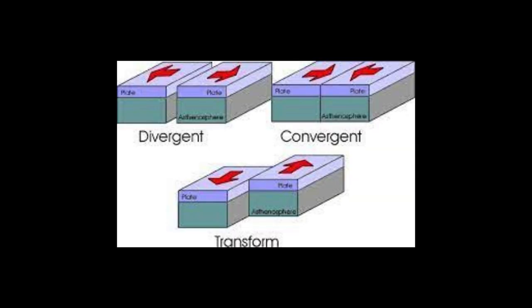Can I get a what-what for the tectonic plate wrap? There's three types of boundaries: convergent, divergent, and transform.